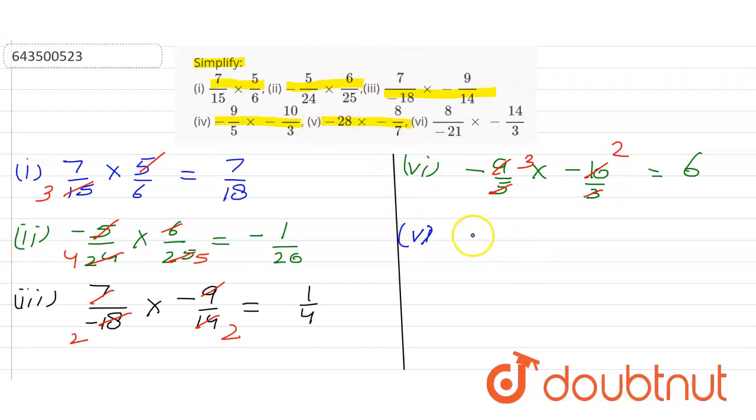In this they gave us minus 28 multiply with minus 8 by 7. If I simplify this, 7 fours are 28. The result will be two negative values, answer will definitely be a positive value. 8 fours are 32.